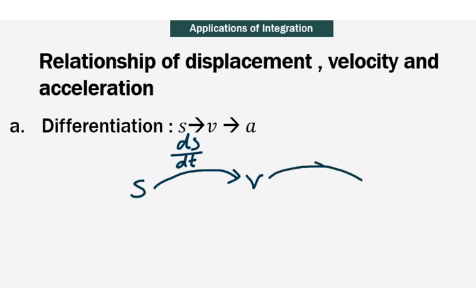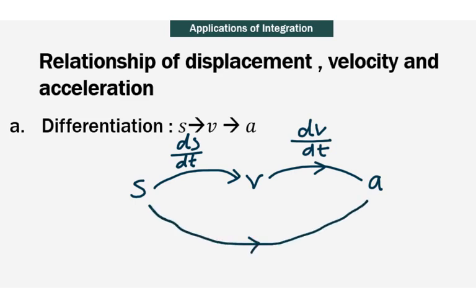Continuing differentiation — when you differentiate the equation of velocity with respect to time, you will be able to get acceleration. In other words, if you are given the displacement equation, you will be able to get the equation for acceleration by going through the second derivative. Hence, acceleration can be written as the second derivative of S with respect to t squared.